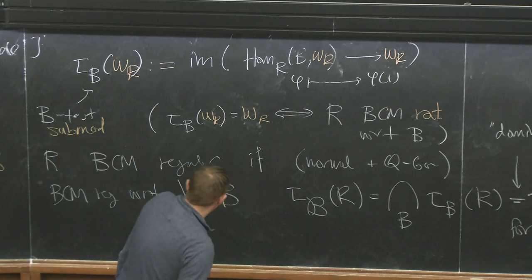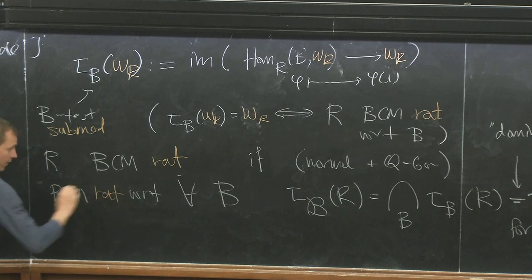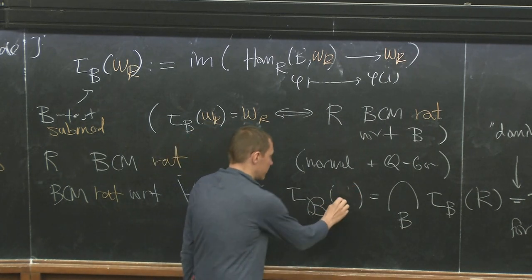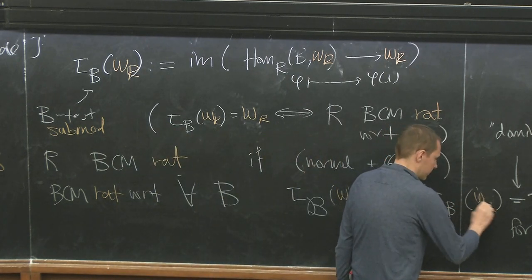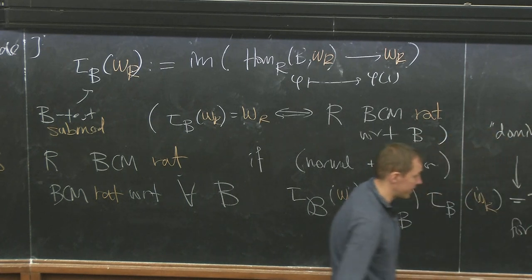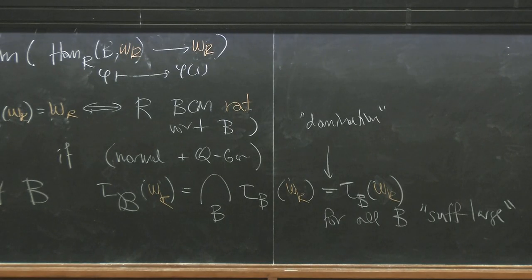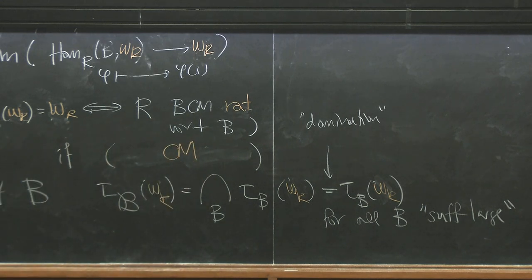BCM rational in general means BCM rational with respect to all big Cohen-Macaulay algebras. The test submodule with respect to all Bs is the intersection and is the same as the test submodule for all sufficiently large Bs.